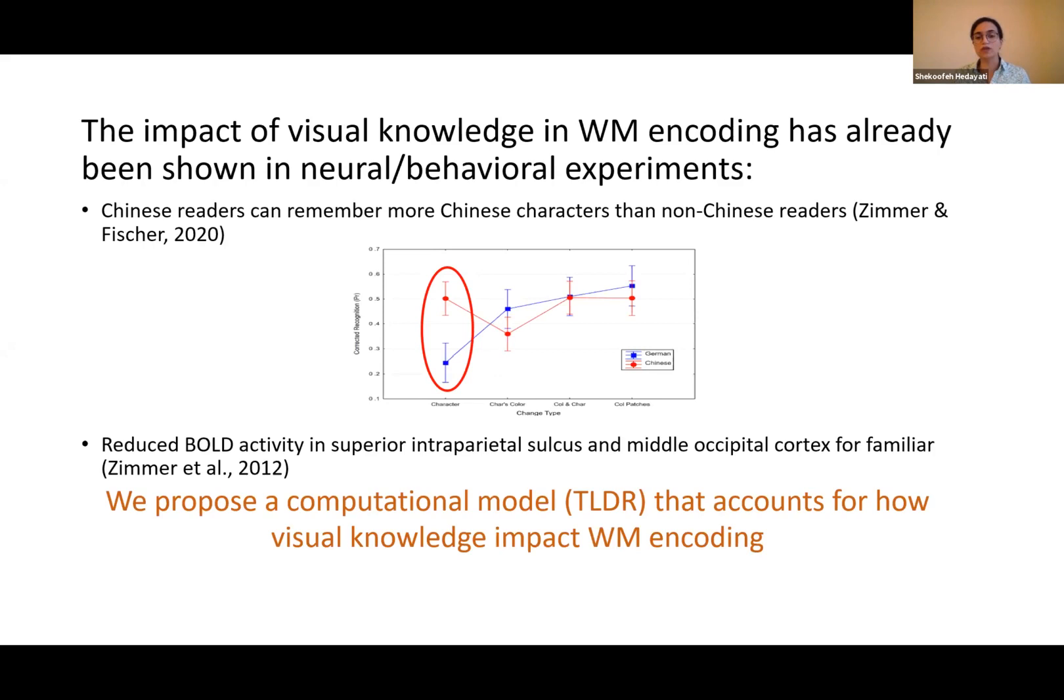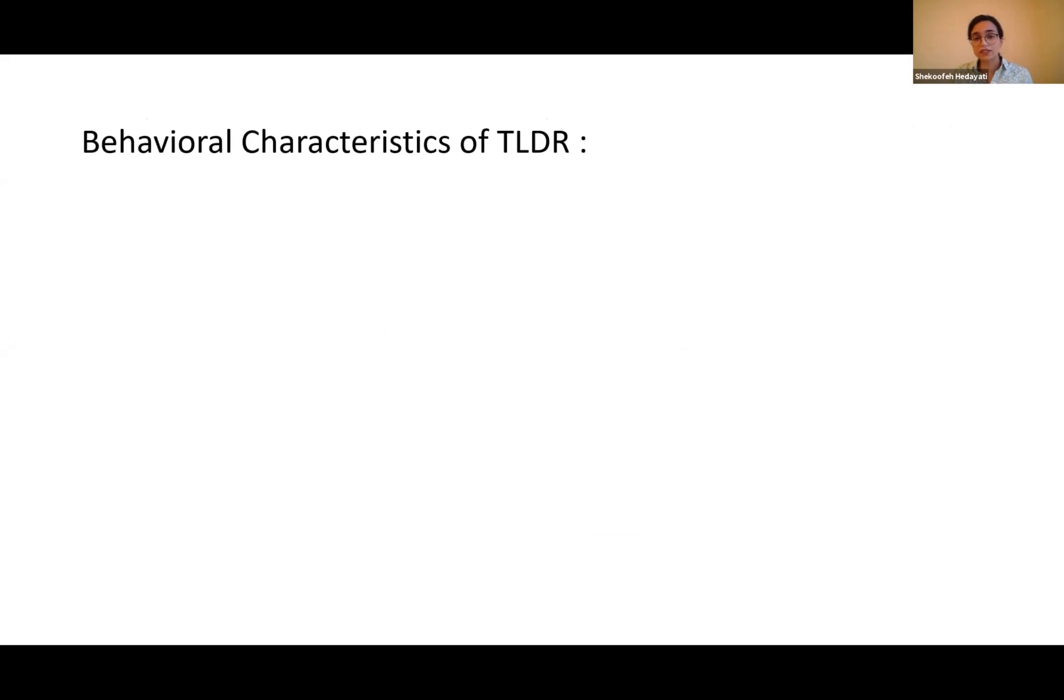So here we are going to propose a computational model, TLDR, that accounts for how visual knowledge impacts working memory encoding. What are the behavioral characteristics of TLDR?